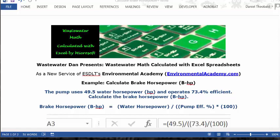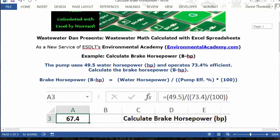So that's the formula: brake horsepower equals water horsepower divided by the efficiency percentage times 100. Let's see how we can enter this in an Excel spreadsheet.